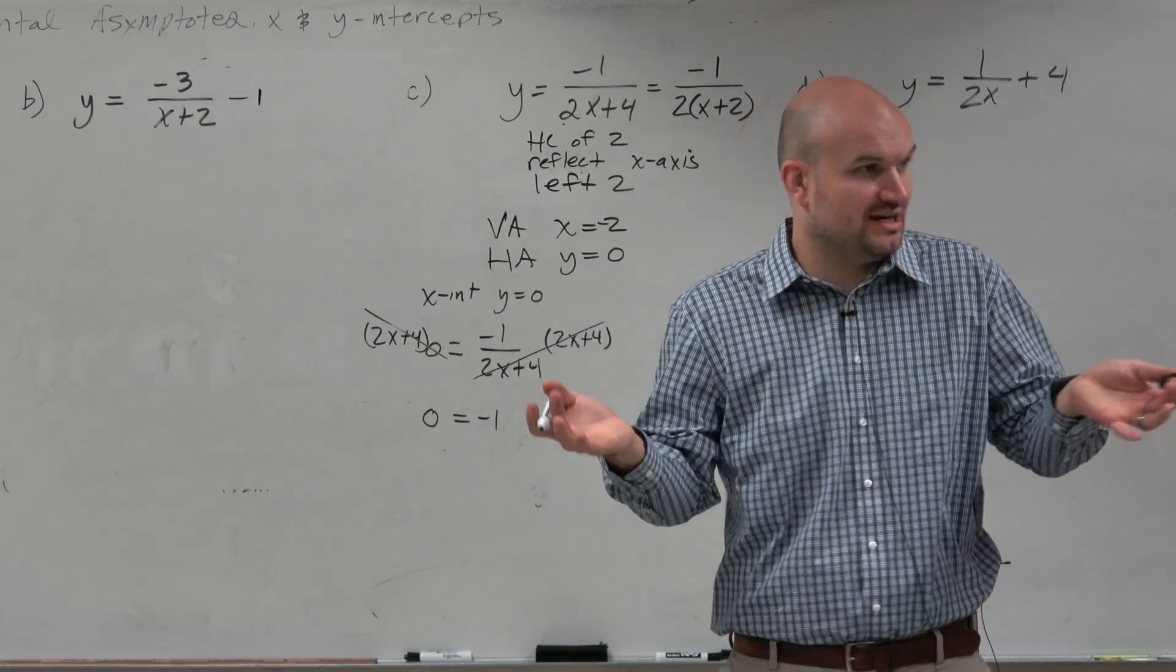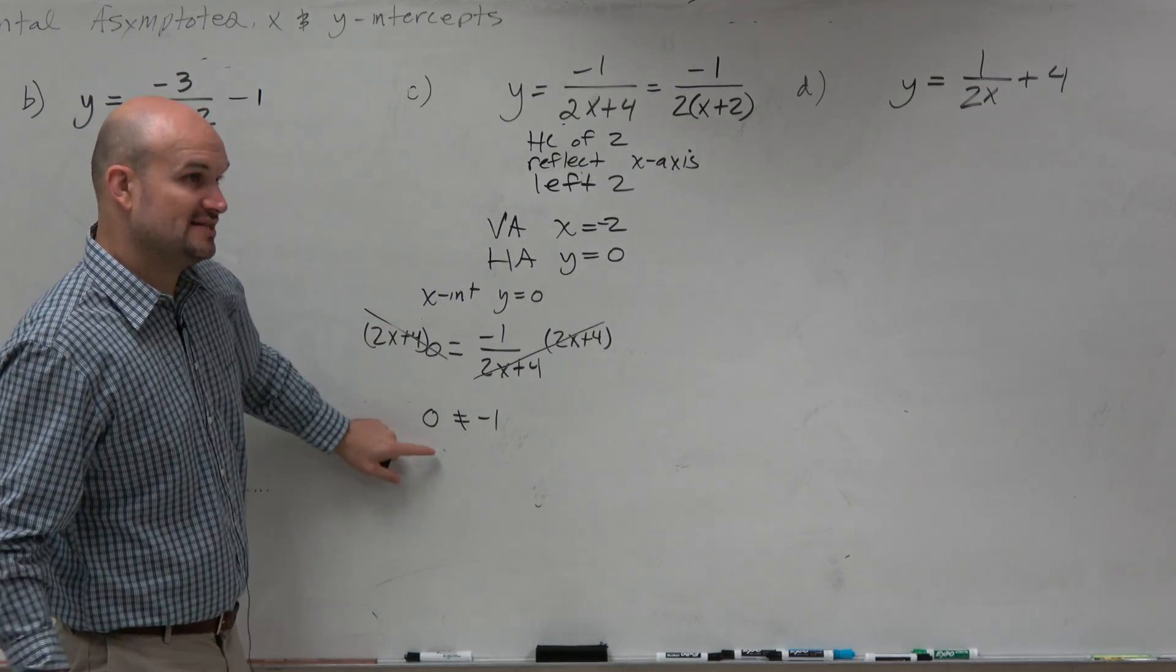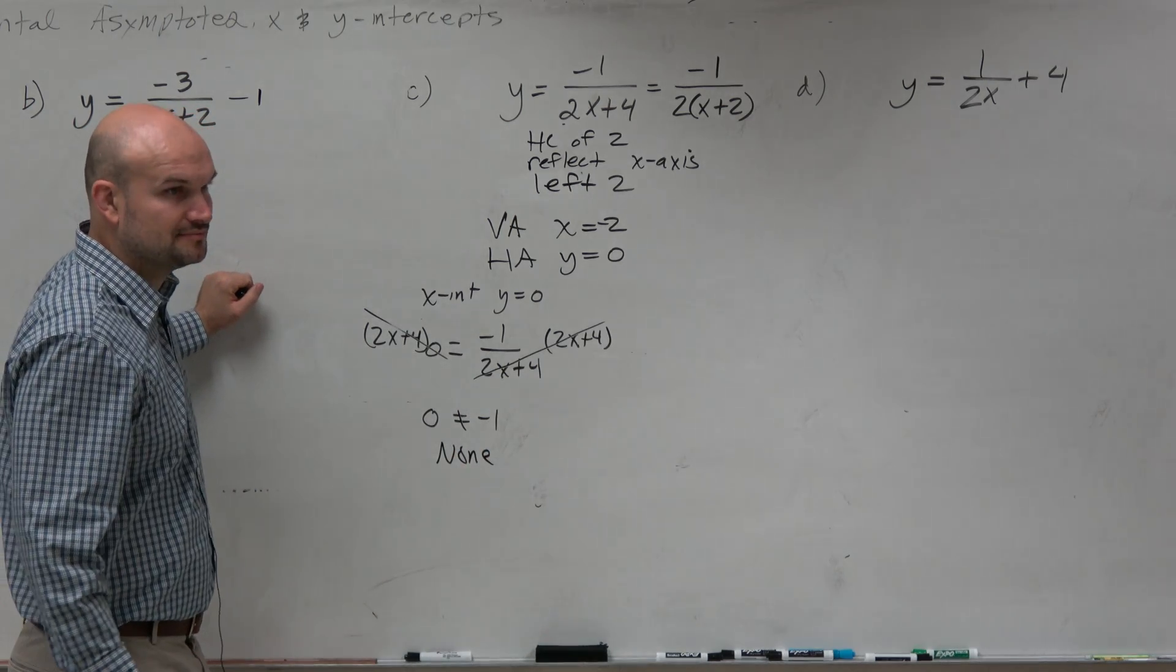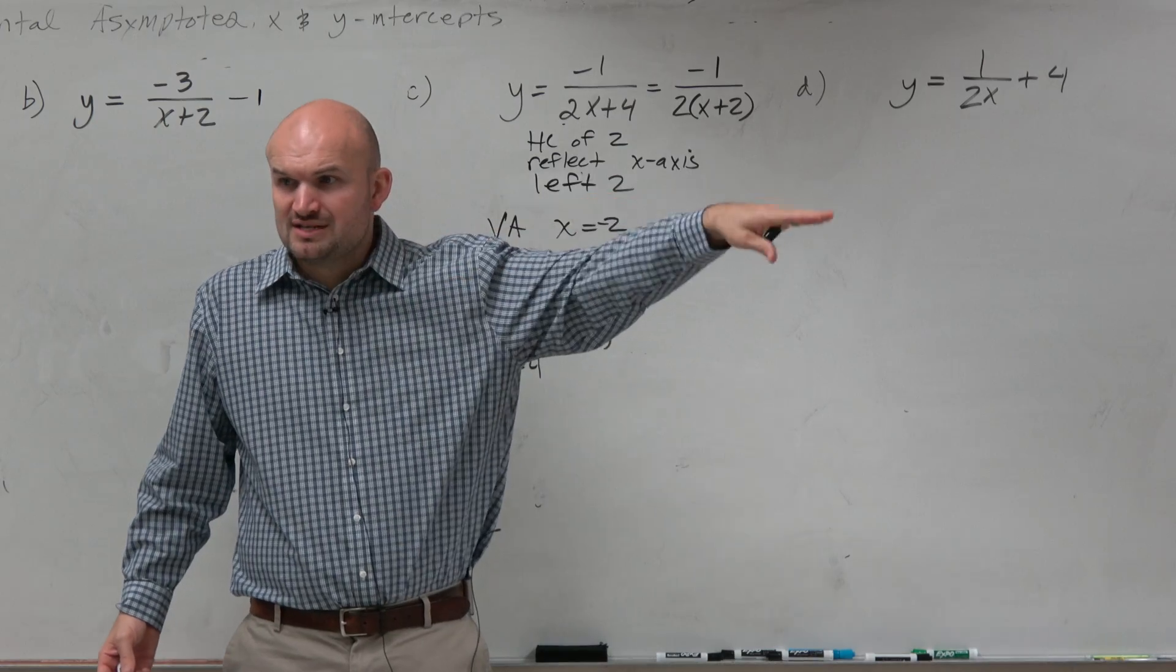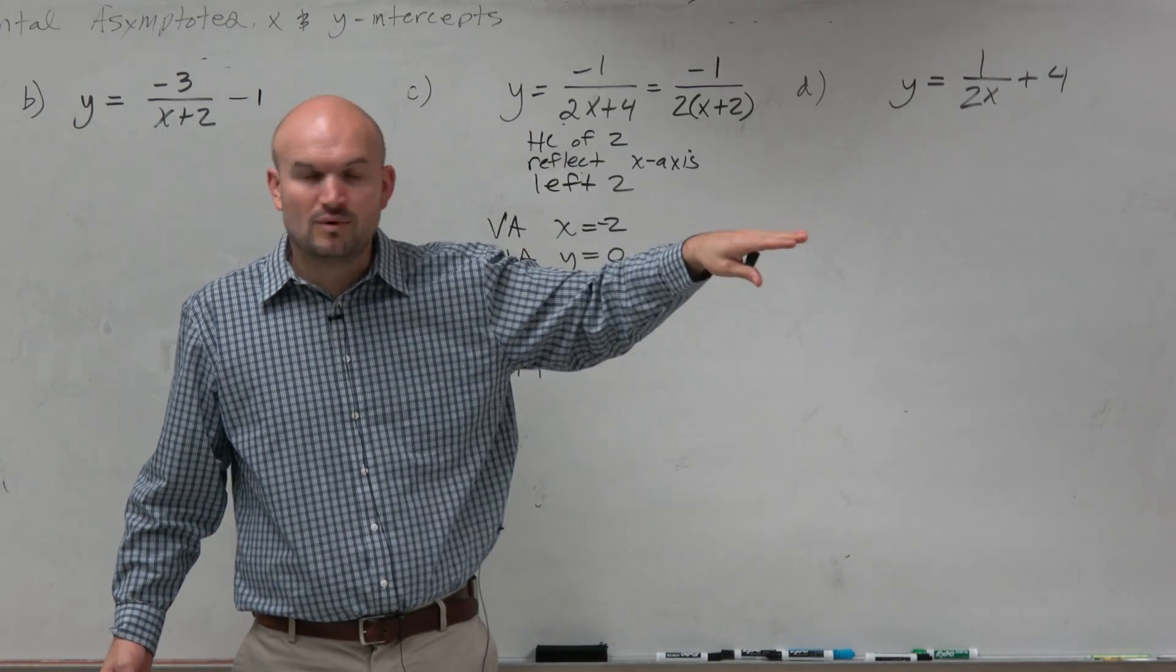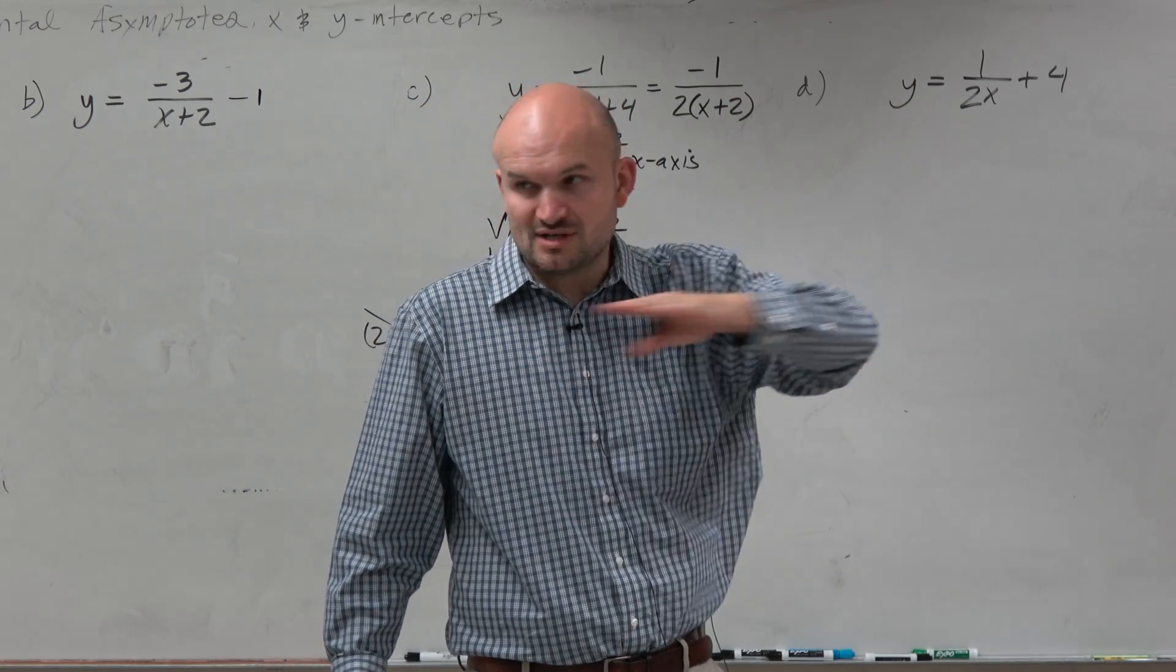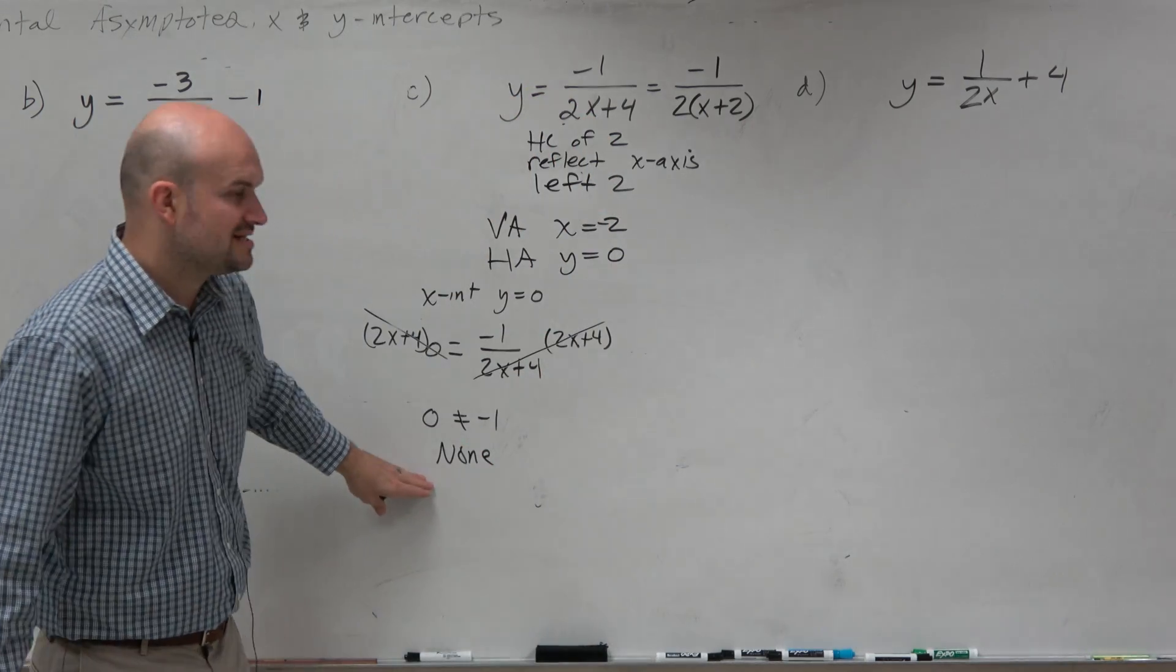0 is never going to equal negative 1. So therefore, since that creates a false statement, there is no x-intercepts. And that kind of makes sense to us as well, because remember, the horizontal asymptote, this graph does not cross like it approaches the horizontal. There's no x-intercept in the parent graph. And so if I'm keeping the horizontal asymptote still at 0, it's still never going to cross. So that's how you can make sense of it.